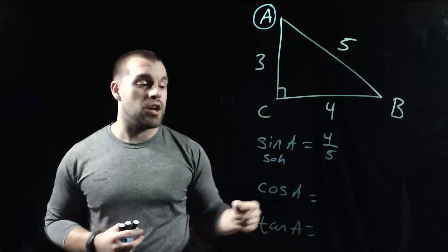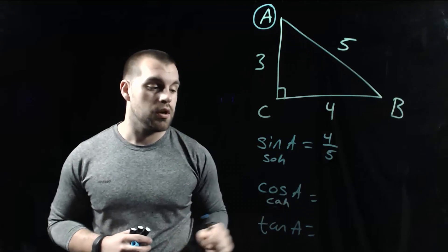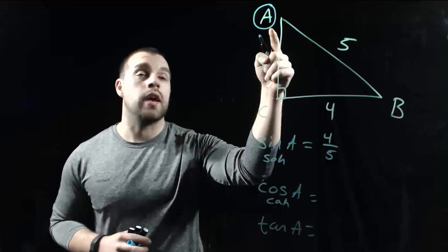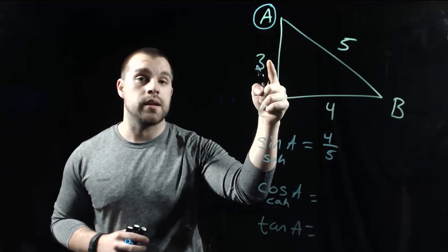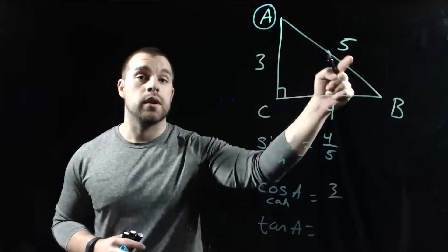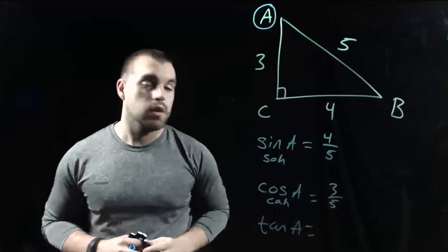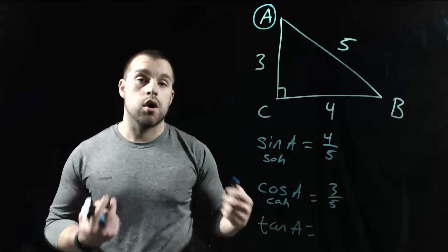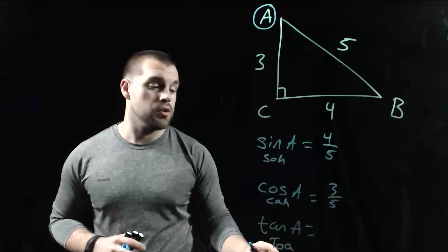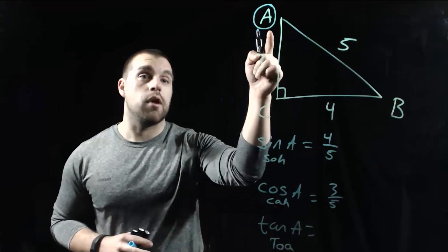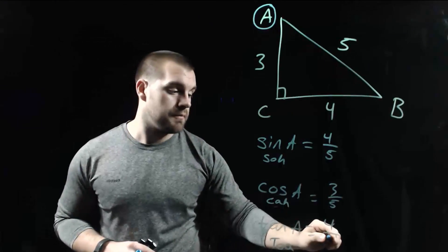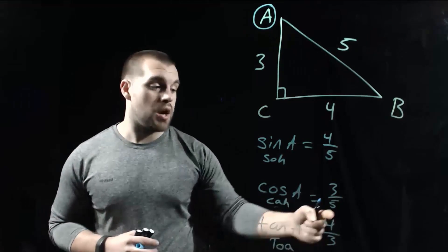For the cosine of angle A — that's CAH, adjacent over hypotenuse — the adjacent side is 3 and the hypotenuse is 5, so cosine of angle A is 3 fifths. For the tangent of angle A — that's TOA, opposite over adjacent — the opposite is 4 and the adjacent is 3, so the tangent of angle A is 4 thirds.